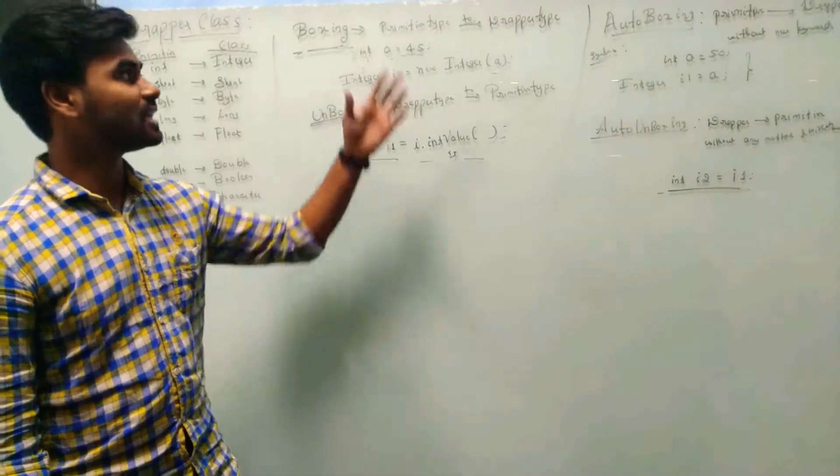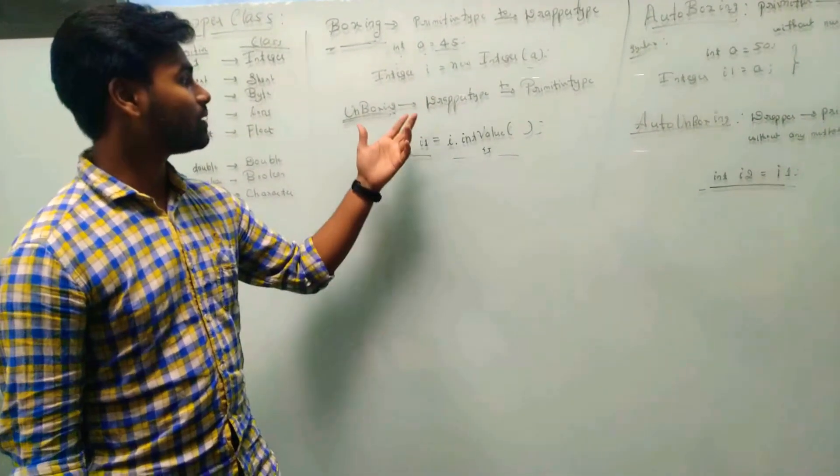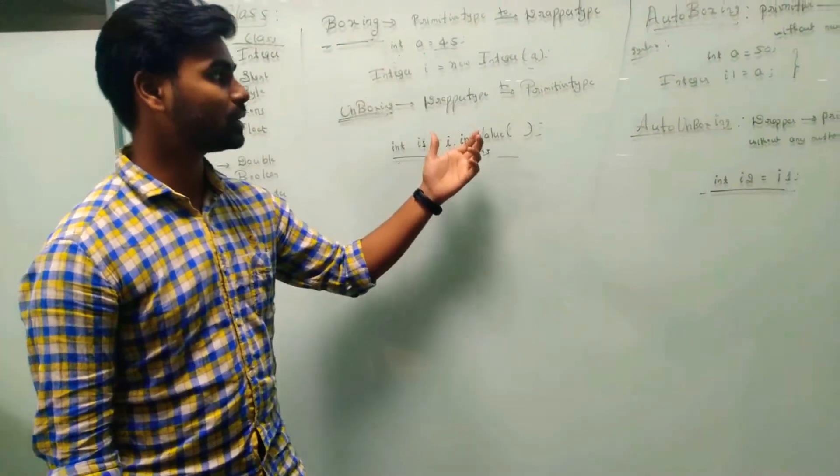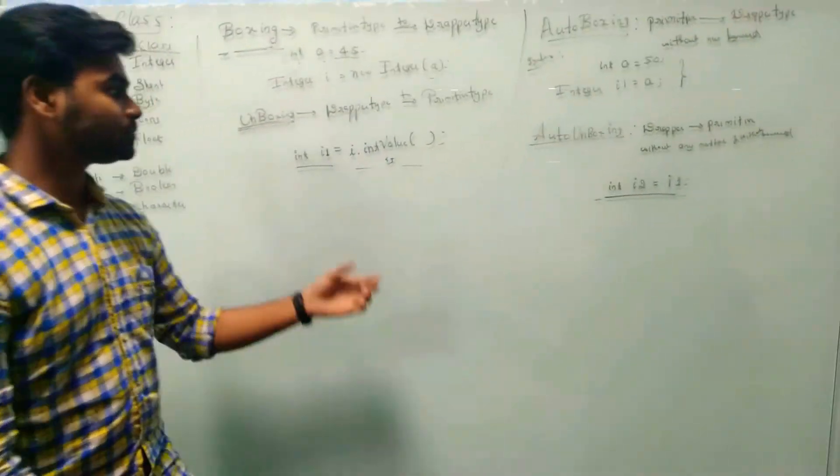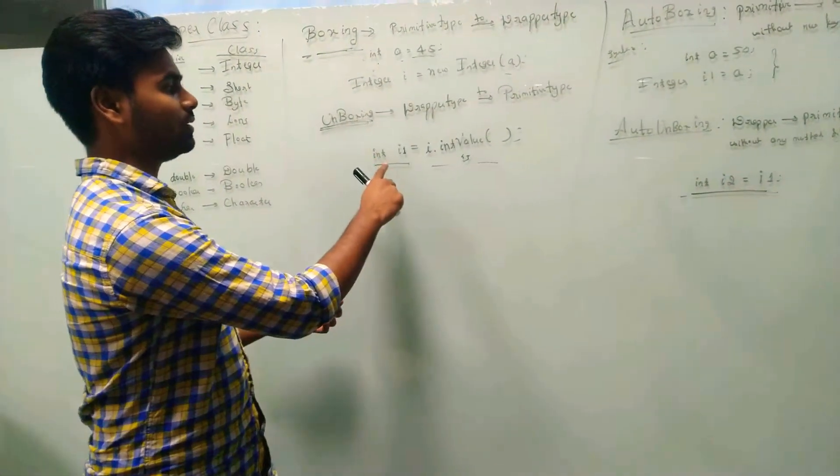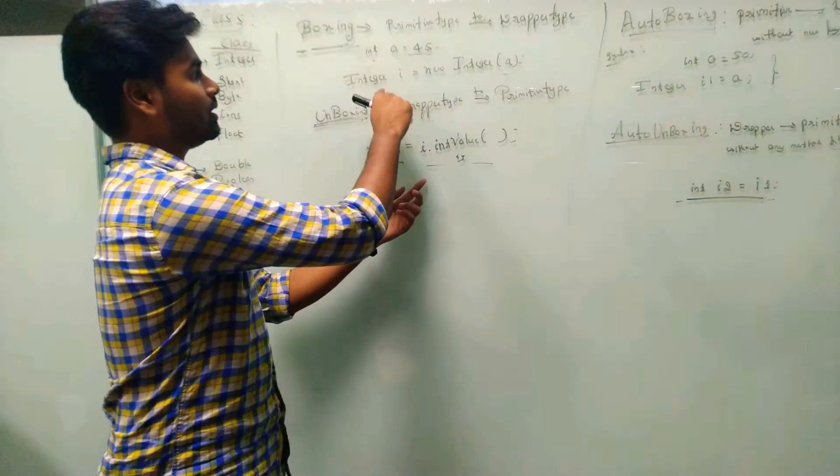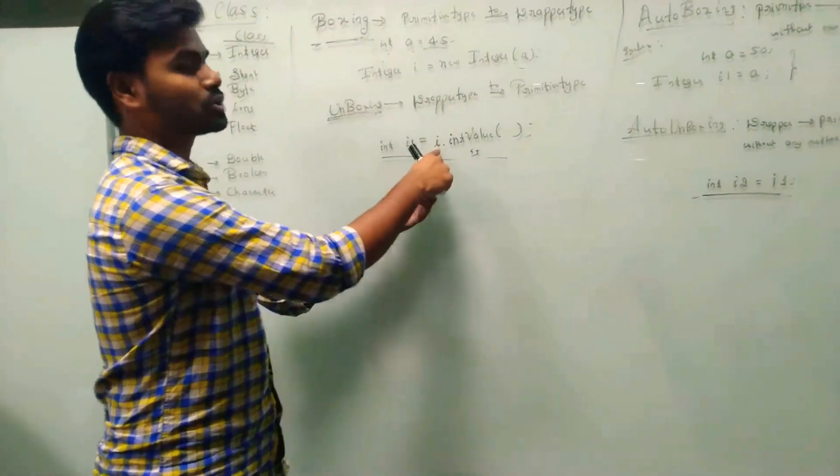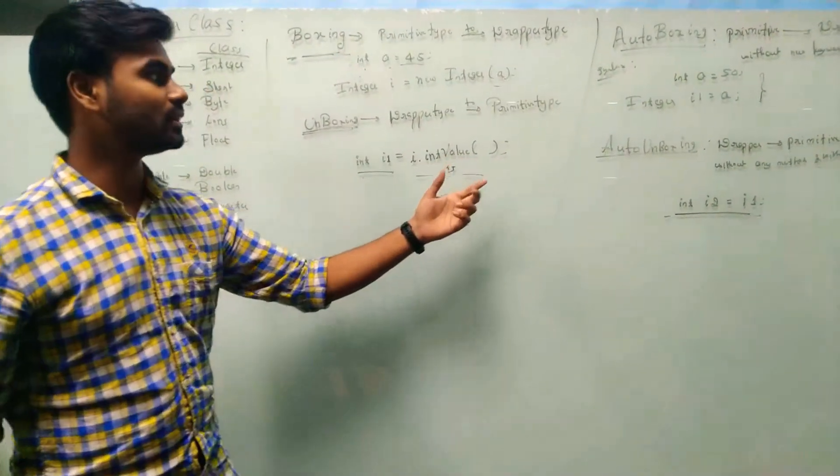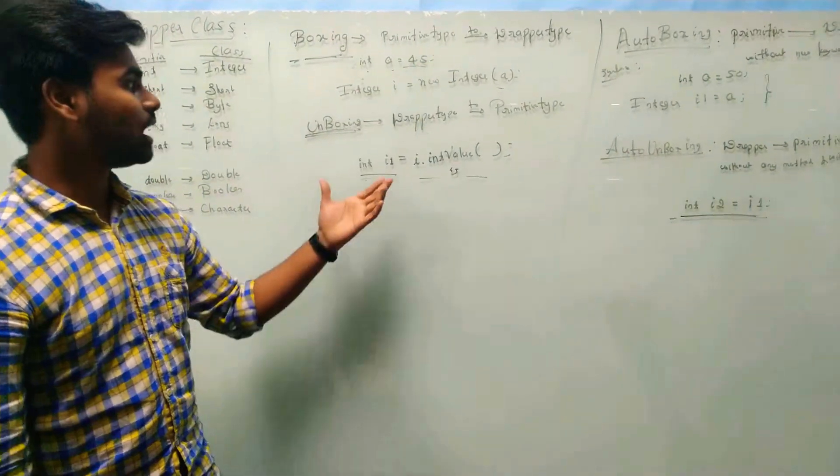In unboxing, it is the reverse process of boxing. In unboxing, wrapper type to primitive type. Here, we are utilizing the intValue() method. And this boxed value should be stored here. And we can print the value of the int. This is unboxing.